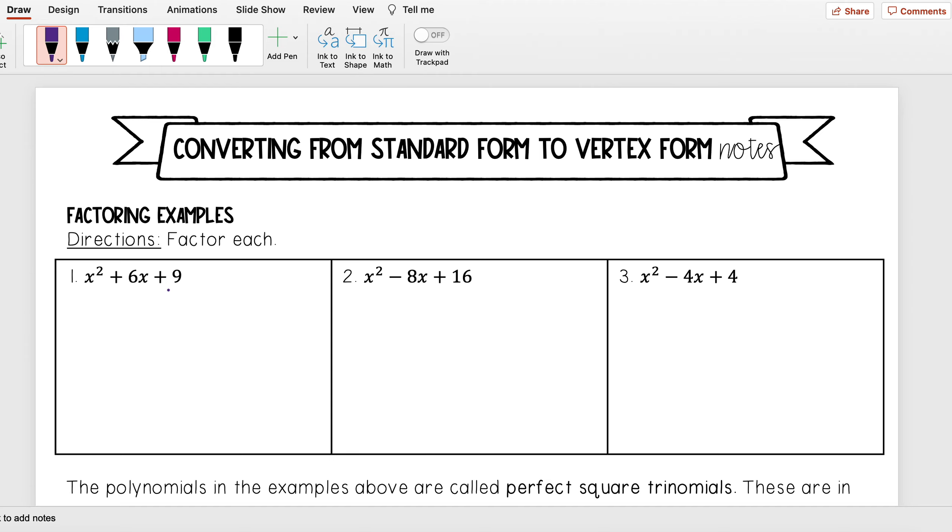So remember to factor these, I'm just looking for two numbers that multiply to c, which is my 9, and add to b, which is my 6. So I'm looking for two numbers that multiply to 9, but then I want them to add to equal 6.